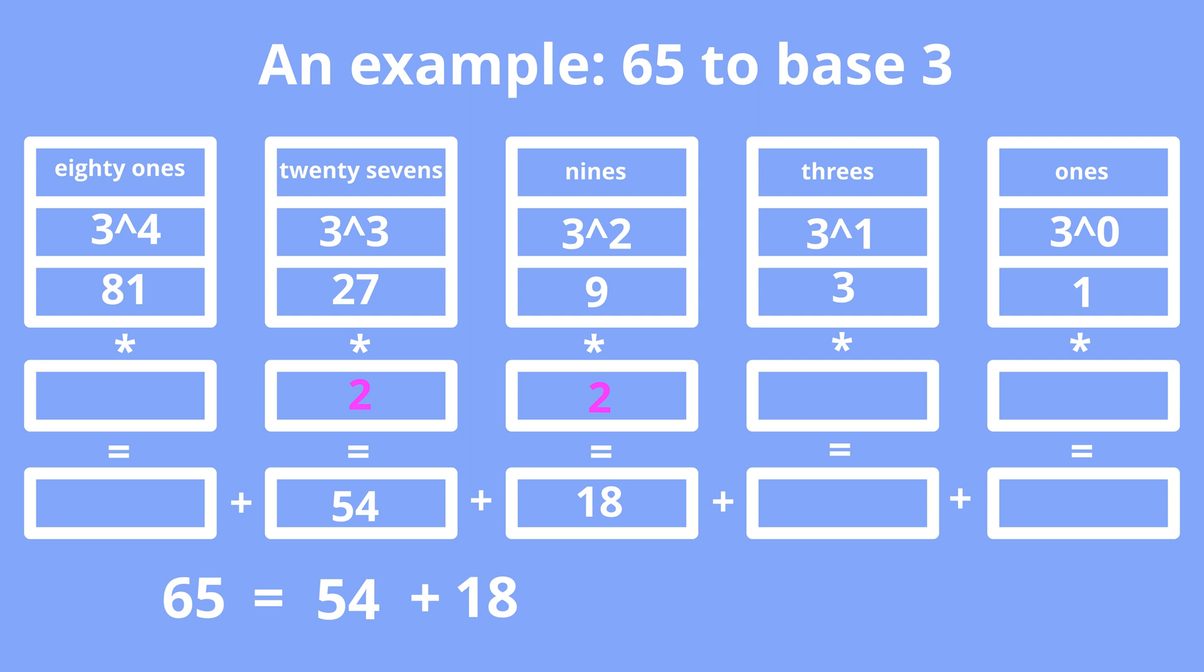Let's try to put digit 2 in the 9s position. 9 times 2 equals 18. 54 plus 18 equals 72, which is greater than 65. So let's decrease by 1 digit in the 9s position down to 1. 54 plus 9 equals 63, which is less than 65. So we can continue.